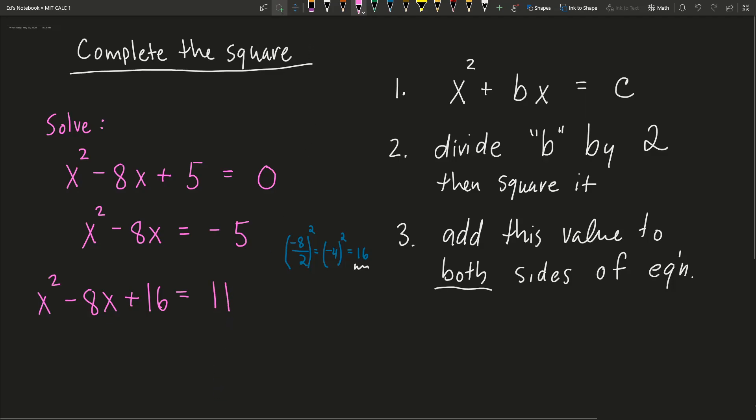Okay. And now this is the beauty of the complete the square method. I have written this left side now as a perfect square trinomial, which means that I can factor it to x. And it's always going to be this b value divided by 2. So it was -4. x - 4 squared is equal to 11.